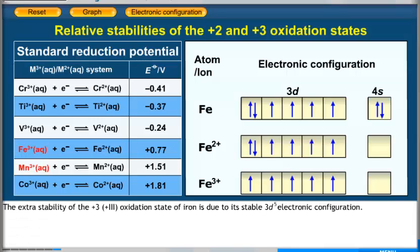The extra stability of the plus 3 oxidation state of iron is due to its stable 3d⁵ electronic configuration.